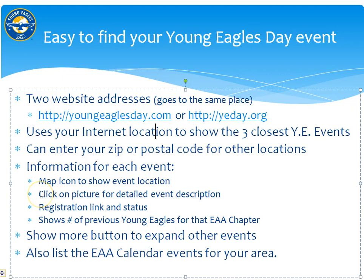For each event there is a map icon to show the event location. You can click on the picture for a more detailed event description and contact information. It has a registration link and status showing whether registration is open, closed, or full, and shows the number of previous young eagles that chapter has flown locally. There is also a show more button to expand to other events, showing up to nine events on the home page, plus a list of EAA calendar events for your area.